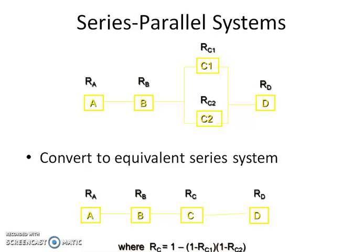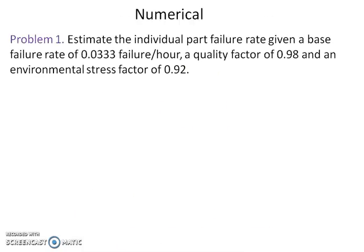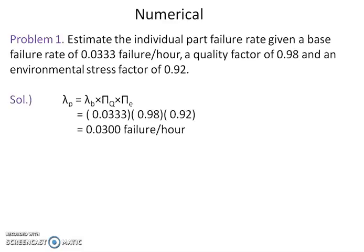This example is the combination of series and parallel. First we will make parallel component into equivalent series component and then we will calculate the net reliability. We are considering an example of a part whose failure rate is given as 0.333 per hour. Two more factors are given in the numerical: quality factor and environment factor. Net failure rate is equal to base failure rate into quality factor into environmental factor.